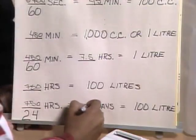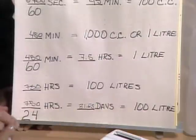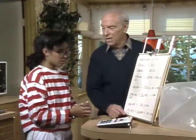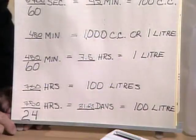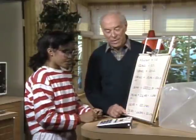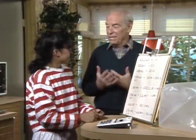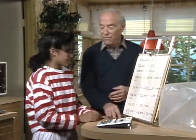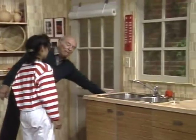So 31.25 days is about a month — and that means 100 liters wasted! You thought 10 liters, but it's actually 100 liters in one month at one drip per second. Here's how much water you'd waste. Come on, I'll show you.